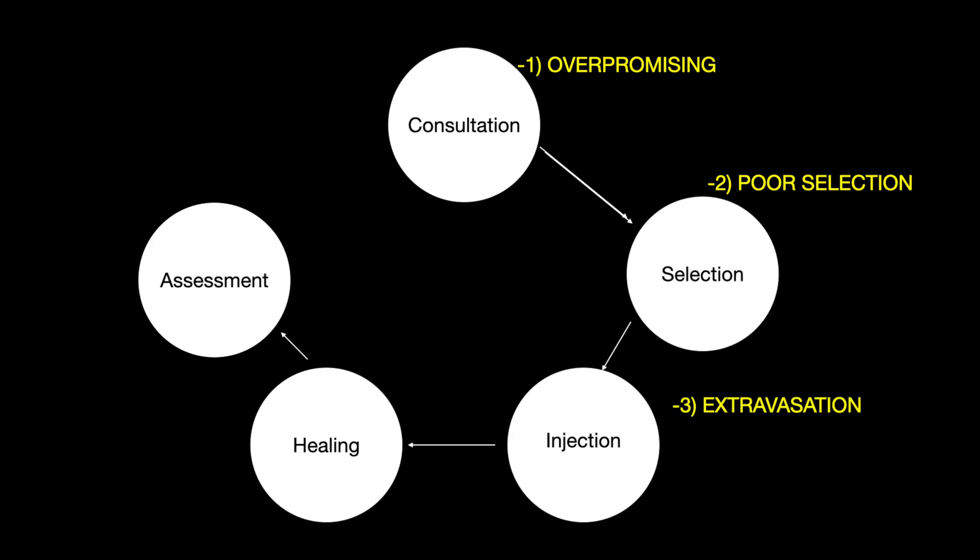Mistake number three, extravasation. Now, successful injection results in blanching of the vessel. And injection outside the vessel, which obviously is not desirable, causes bleb formation.